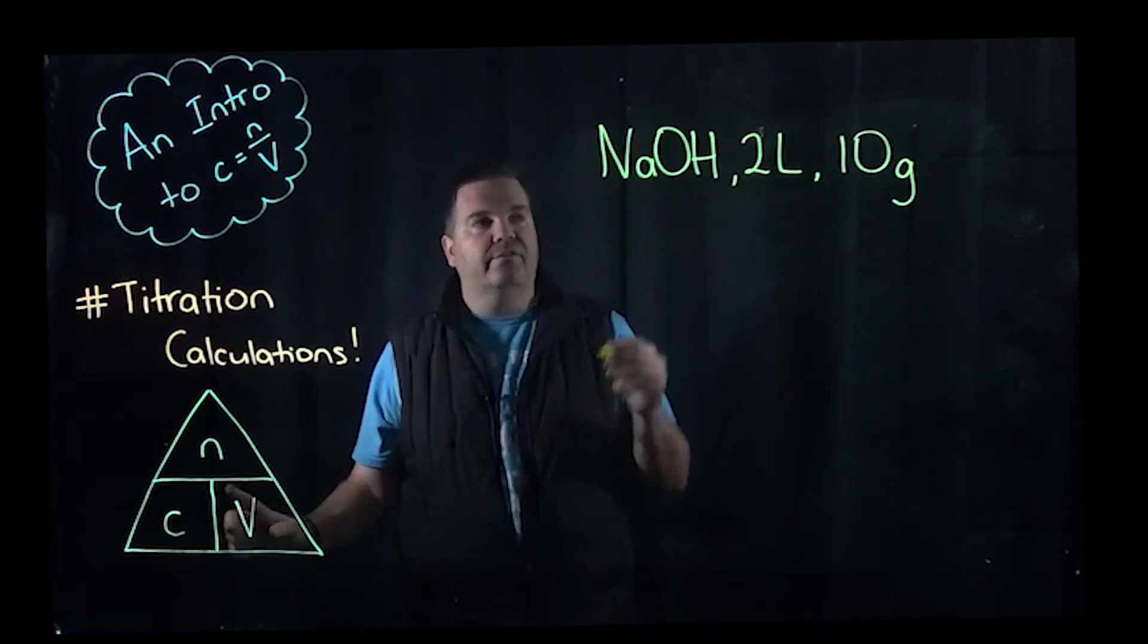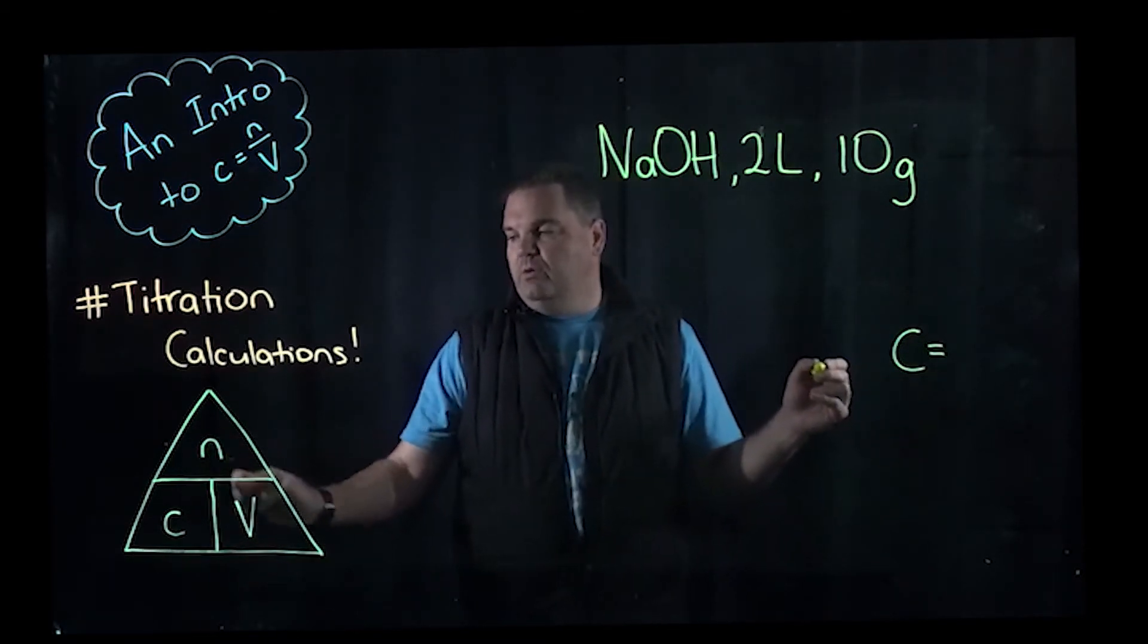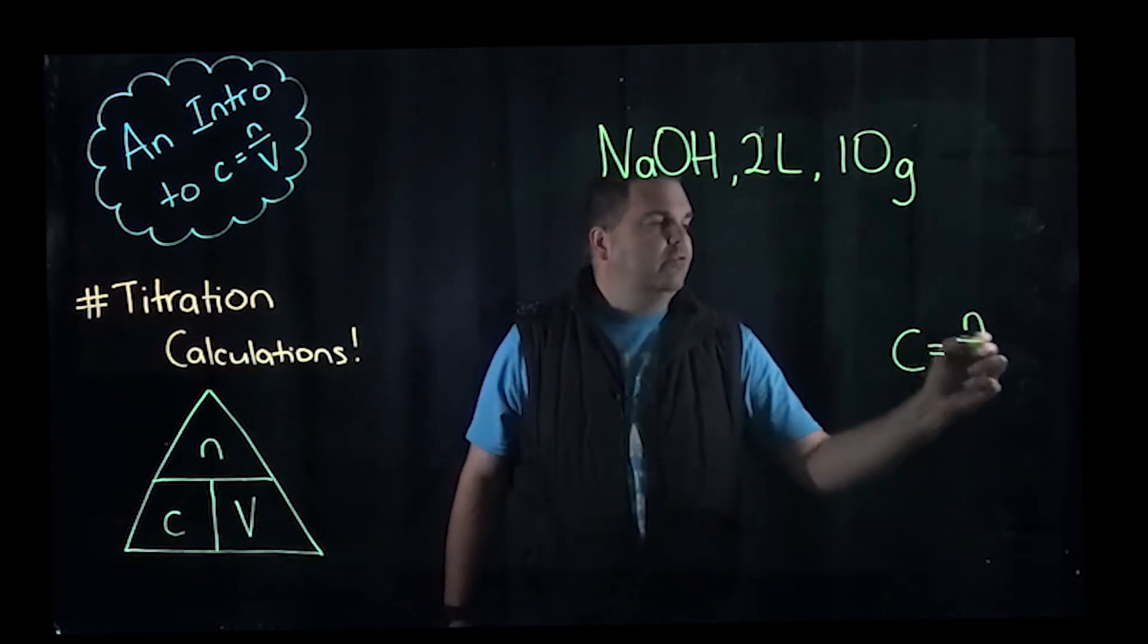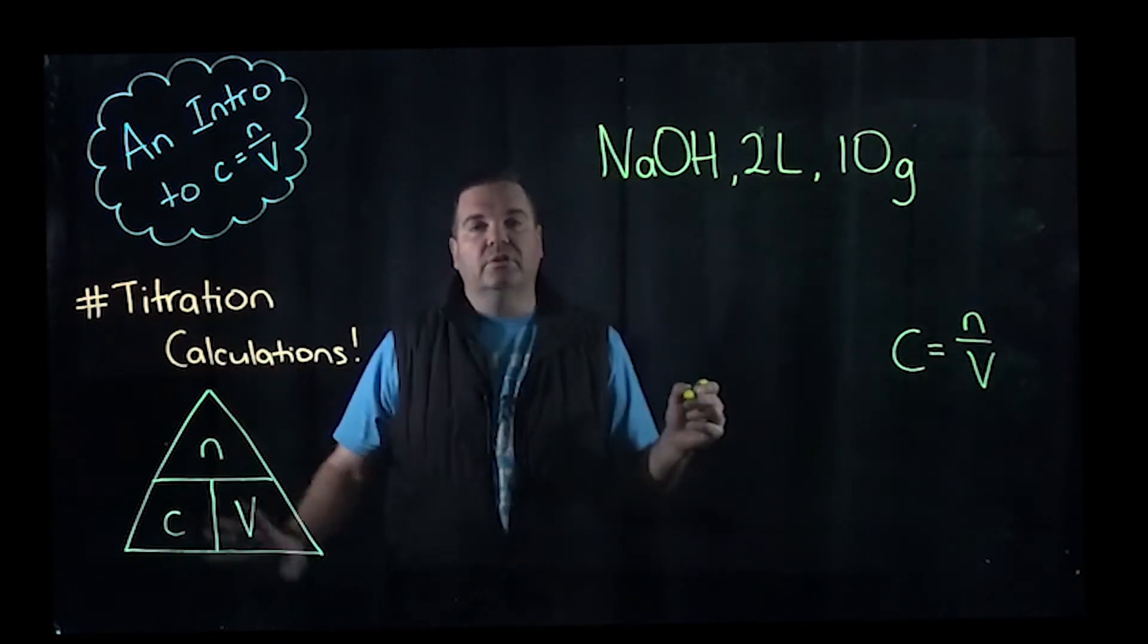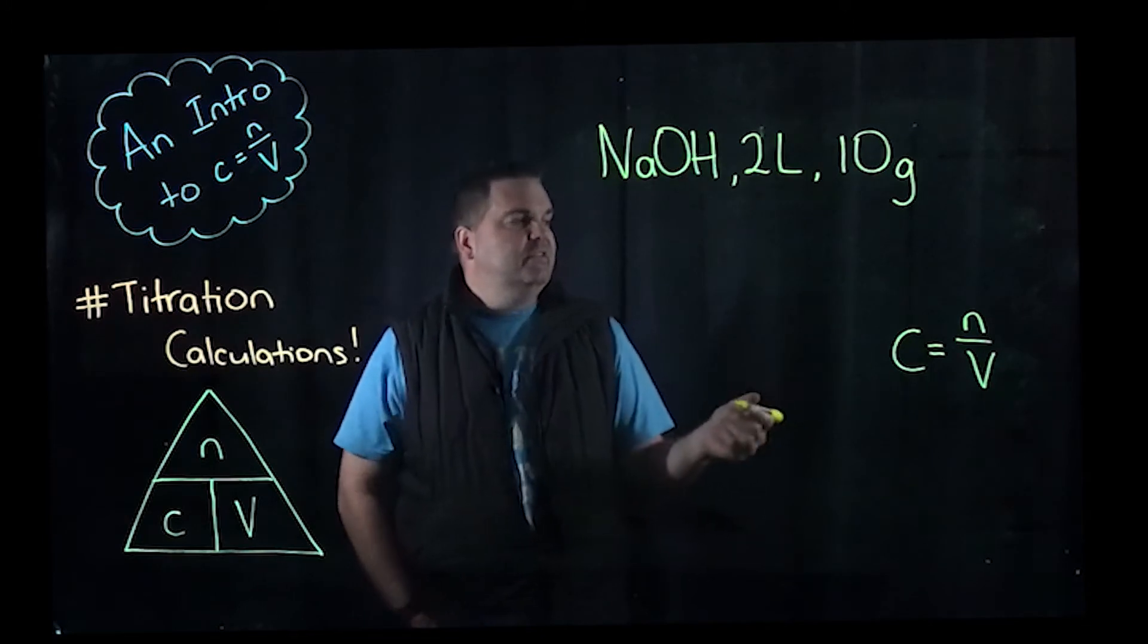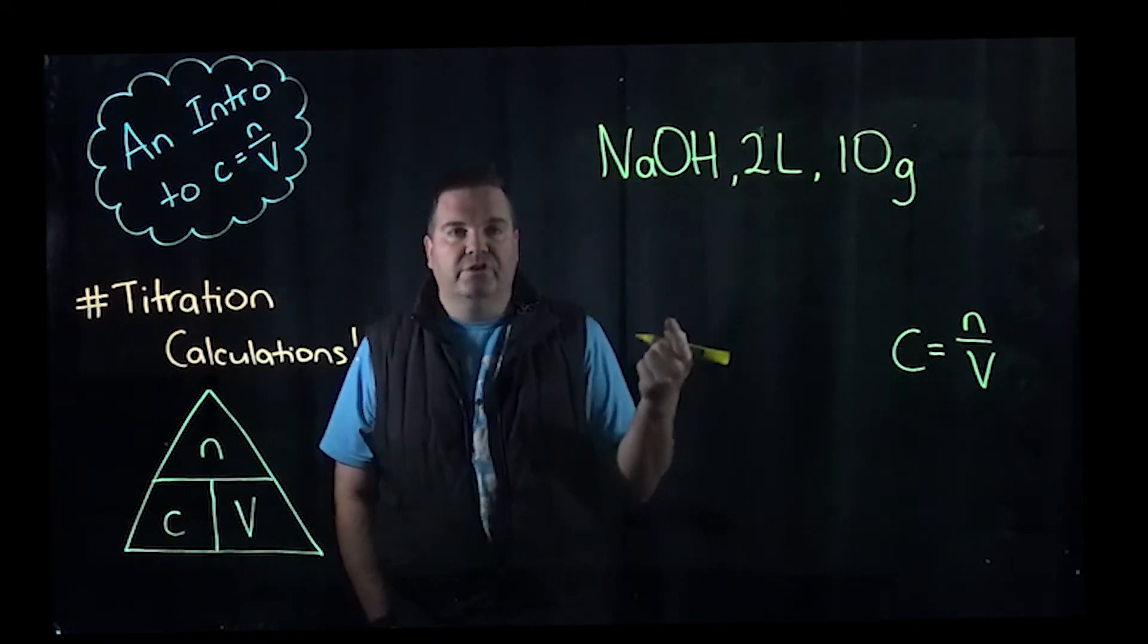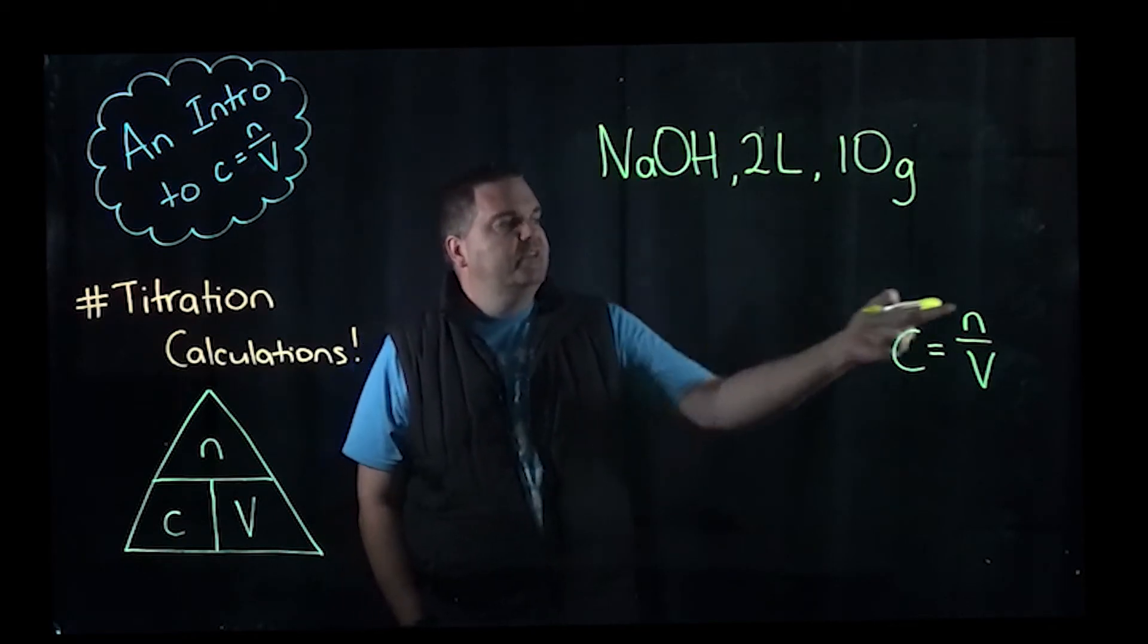So using the triangle over here, concentration is going to equal number of moles over volume, N over V. You just need to make sure you learn this triangle, make sure you know how to use it. Now, if we're looking at this, we need to know number of moles. We know our volume is two litres, we don't need to do a conversion there, but we need to know number of moles.